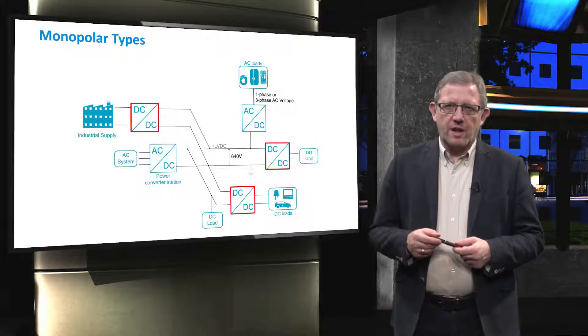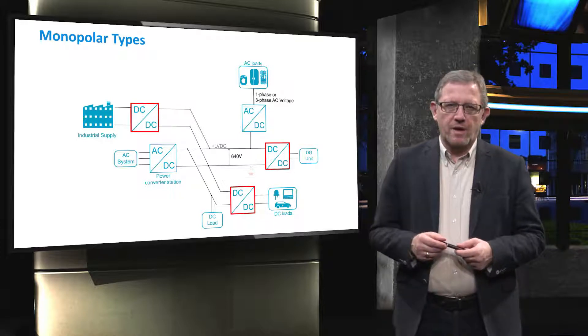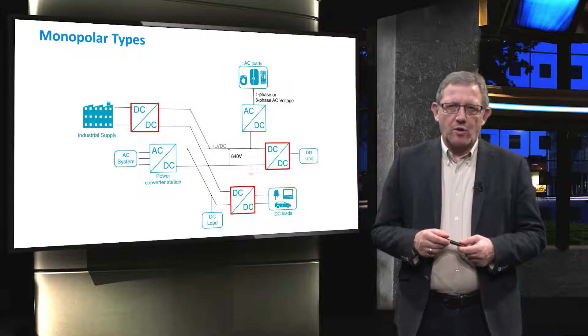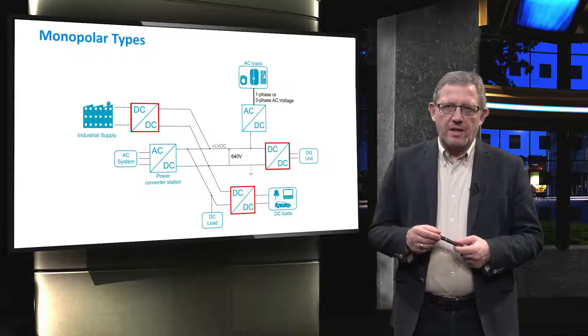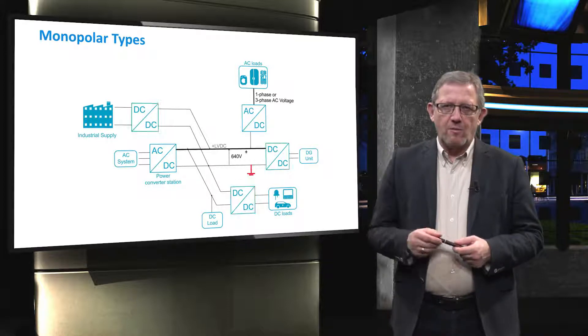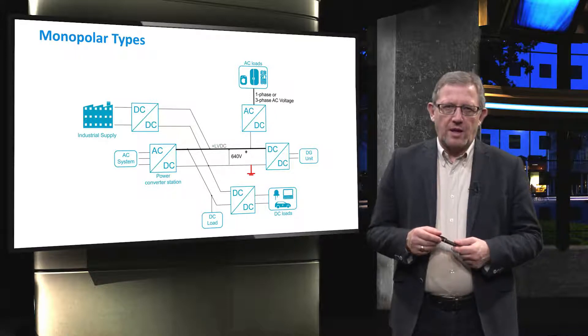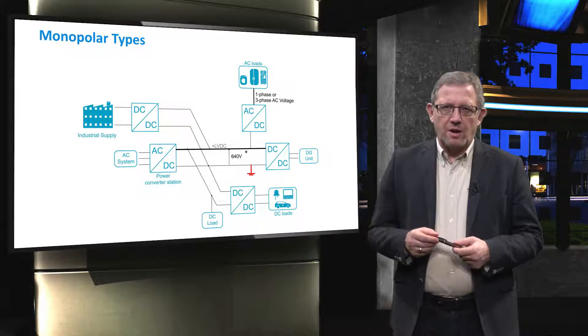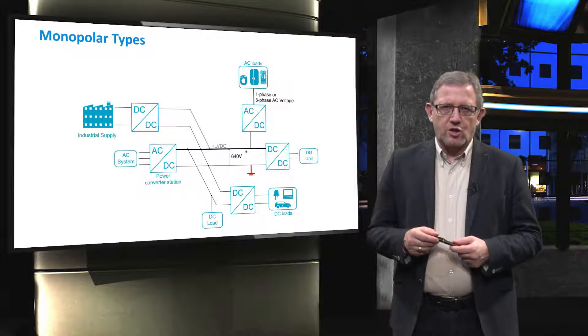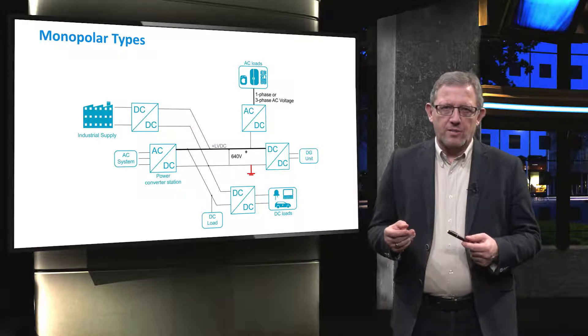Also, generator units and DC loads are connected simply through DC-DC converters. The first type is the monopolar for which the best voltage for distribution of the microgrids is 350 or 380 volt. As mentioned, monopolar means that one conductor is positive and the other point is grounded. This is the simplest type. It requires simple conversion, but if there is a fault somewhere, all the grids get short-circuited because there is only one pole.